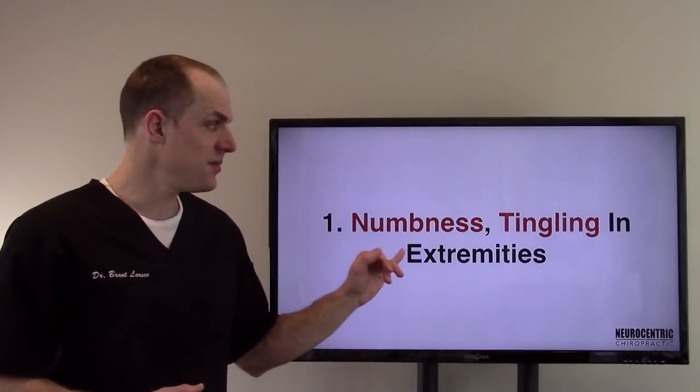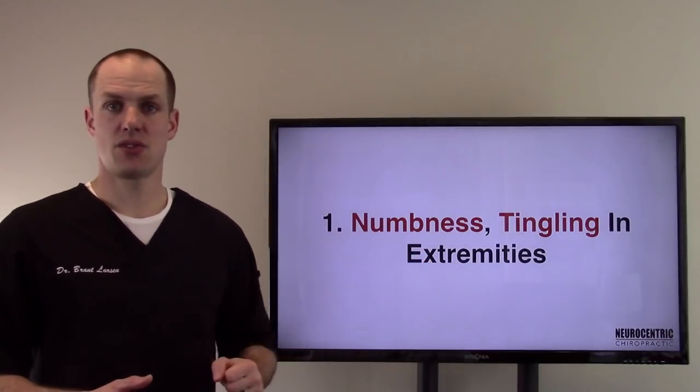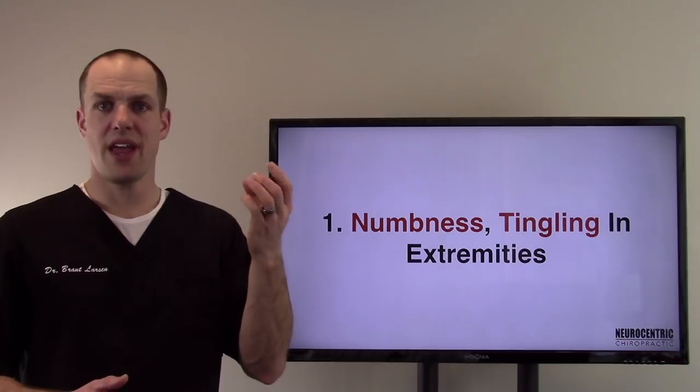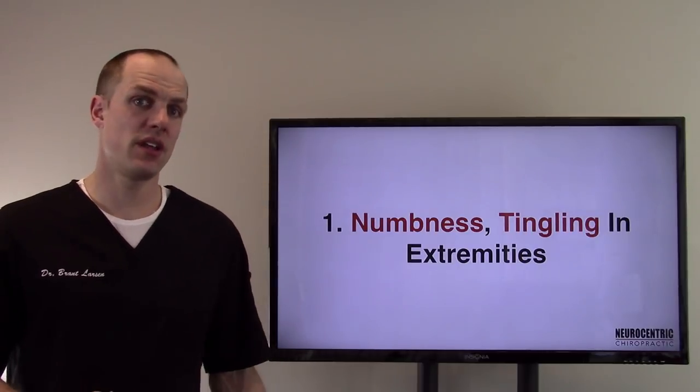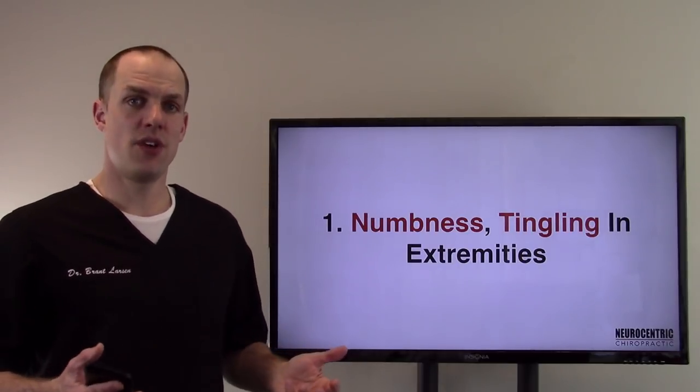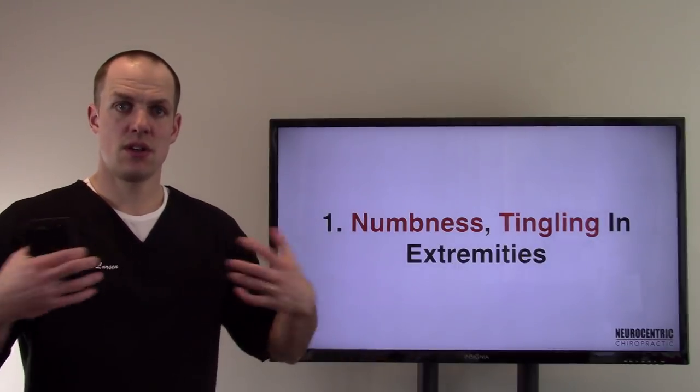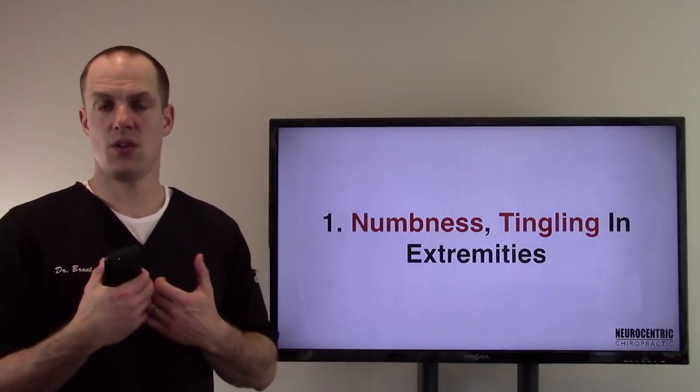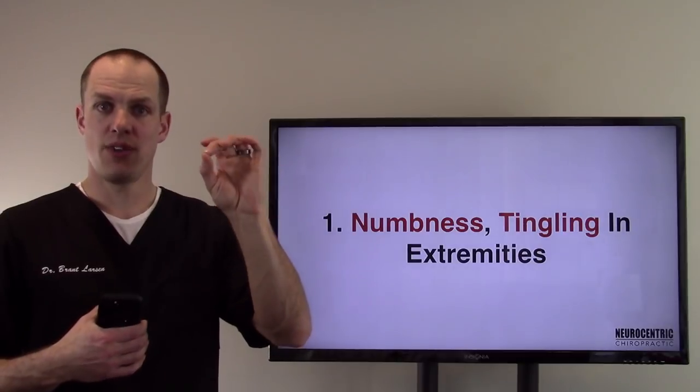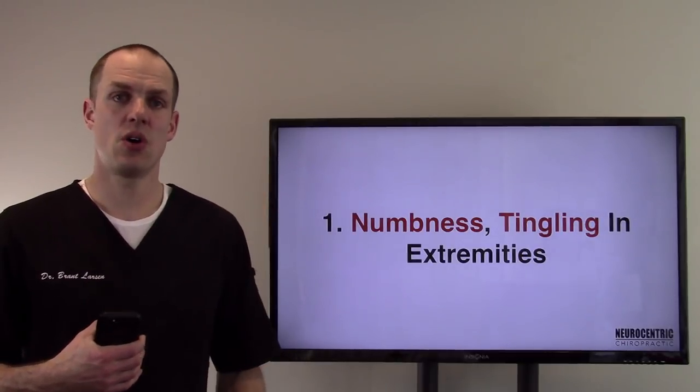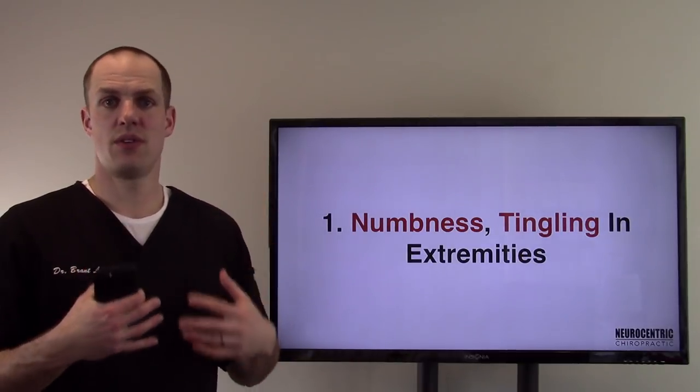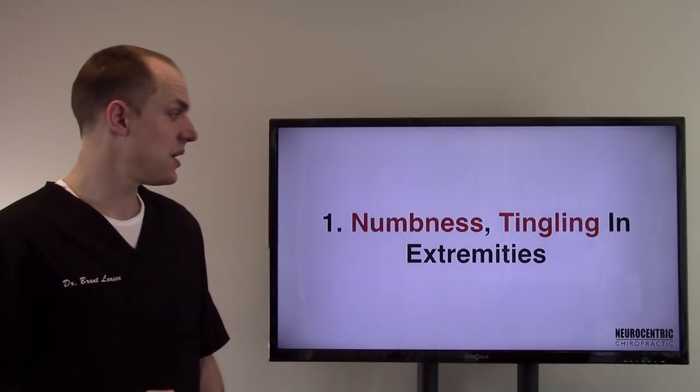Number one is numbness and tingling in the extremities. Anything out here, hands are tingling, they're numb, your feet are tingling, they're numb. B12 deficiencies will commonly hit external to internal or outward to inward. So way out on the fingertips, on the tips of the toes, and then it's going to start to invade more of that central nervous system.